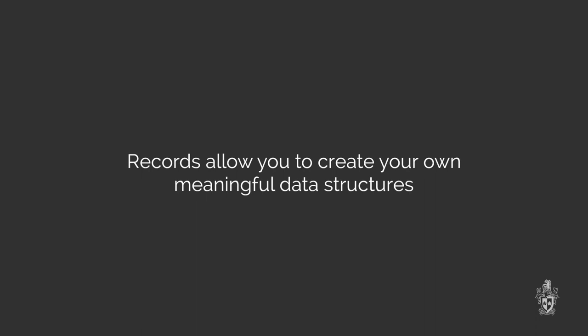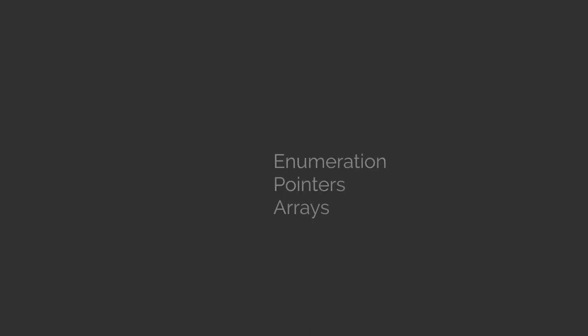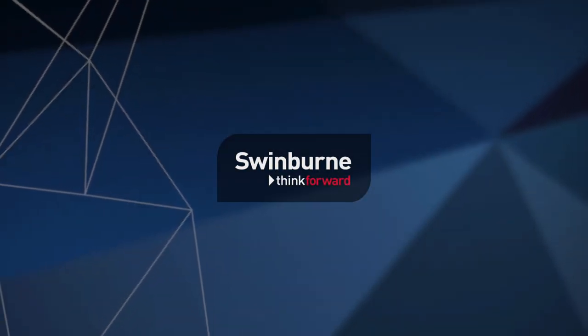That's all we have for records. Records allow you to declare your own data type which contains multiple fields, and you declare the structure of those fields — what you want contained inside this record or structure. Coming up next, we have a video on enumerations, which is another kind of data type. You could also look at pointers — that's what we were talking about with pass by reference. And if you're ready for the next big topic, that's arrays, which is very cool. Thank you very much, and we hope you've enjoyed this. Bye.